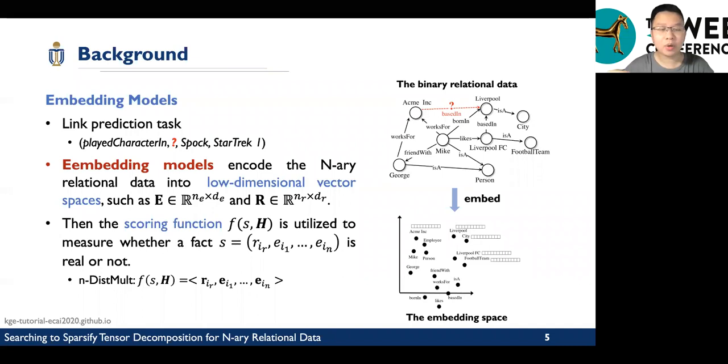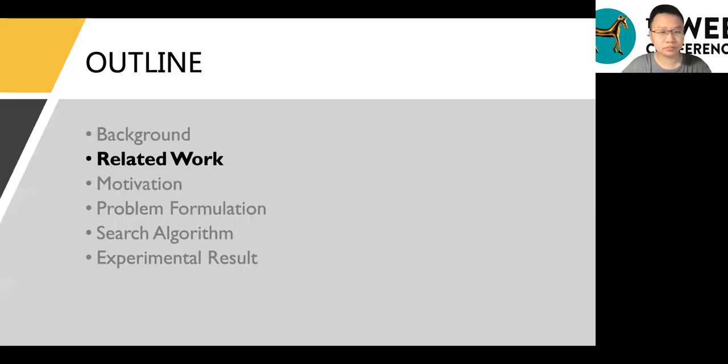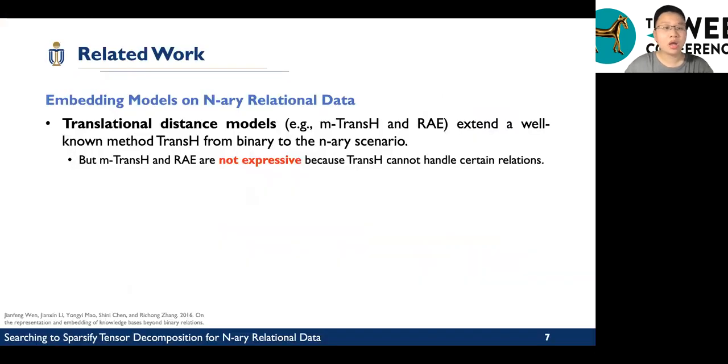Embedding models have been proposed to solve this problem. Embedding models encode the n-ary relation data into low-dimensional vector spaces as relation embeddings and entity embeddings. Then, the scoring function is utilized to measure whether the fact is real or not. Related work: what are the embedding models on n-ary relational data?